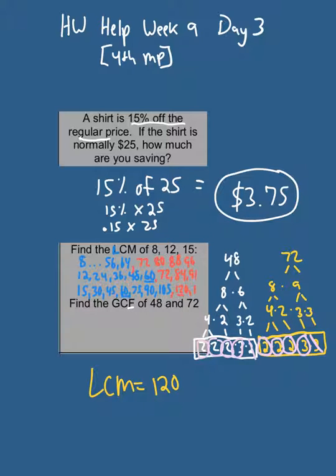So I have 4 common factors, so I have to multiply them together. So are you ready? 2 times 2 is 4, times 2 is 8, times 3 is 24. So that means the greatest common factor, or the biggest number that goes into both, 48 and 72, is 24.